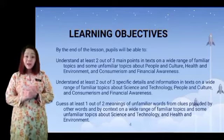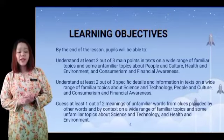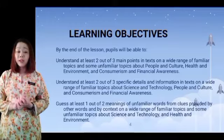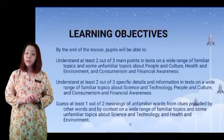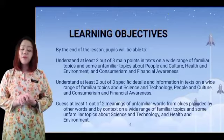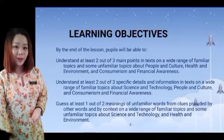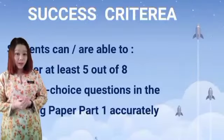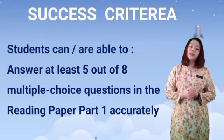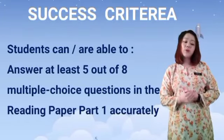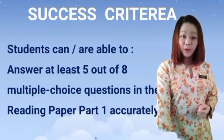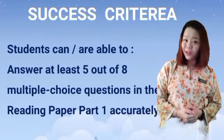Based on the learning objectives, we can see that there are eight questions prepared in this video. All of them are based on the four themes: people and culture, health and environment, consumerism and financial awareness, and science and technology. The success criteria is that students are able to answer at least five out of eight multiple choice questions in the reading paper Part One accurately. Without further ado, let's look at the questions.